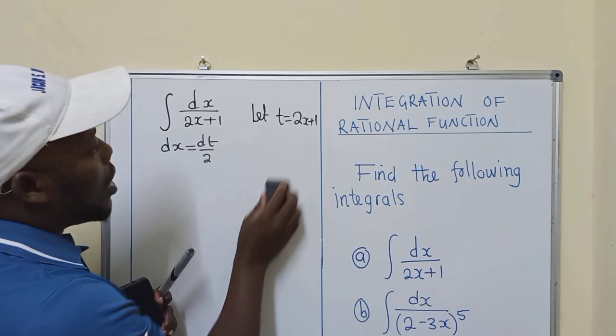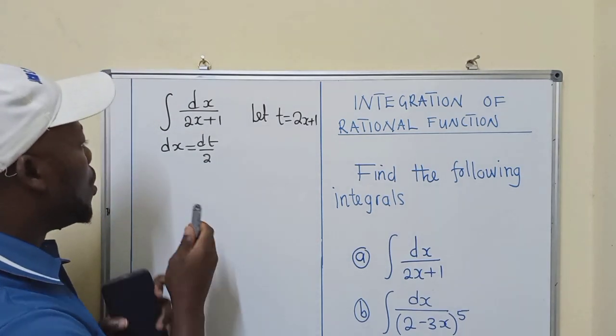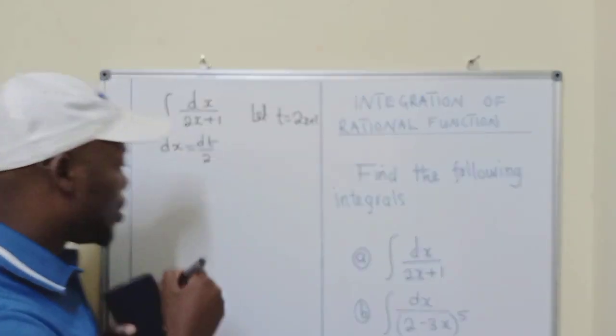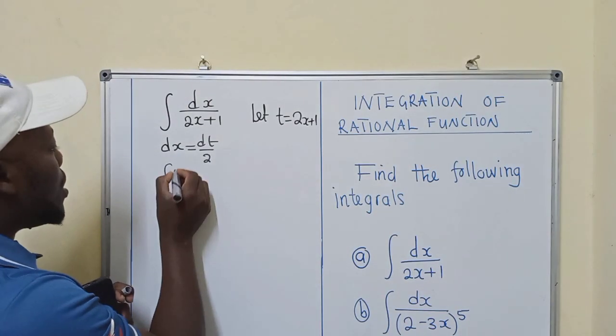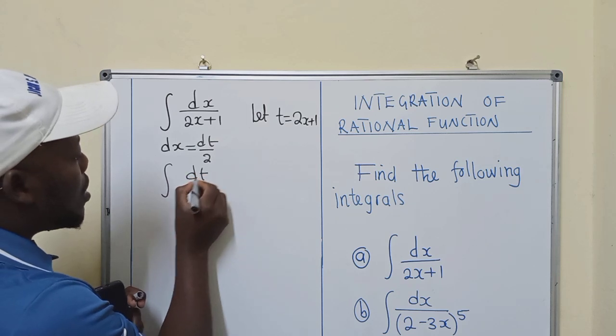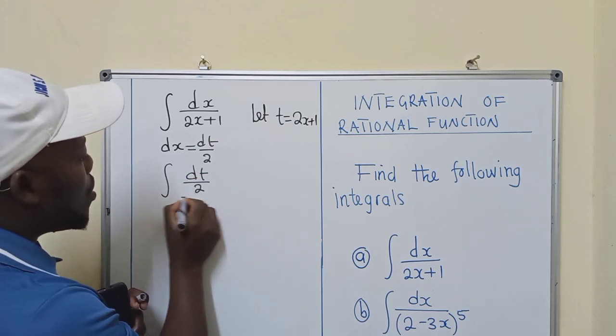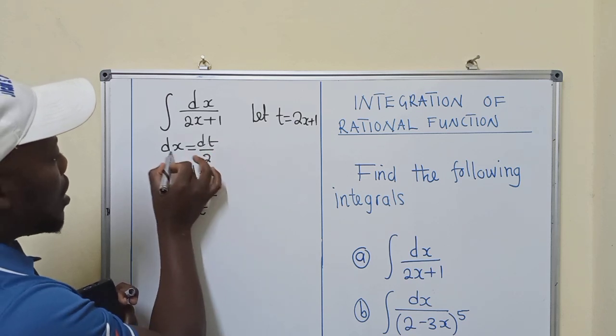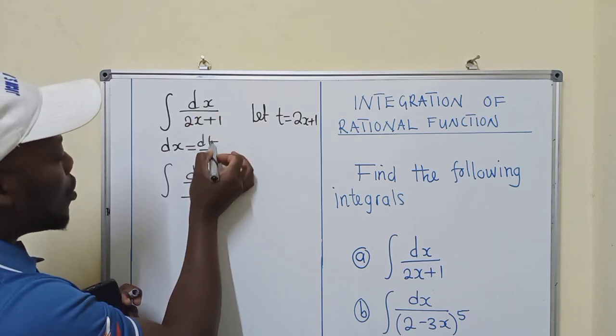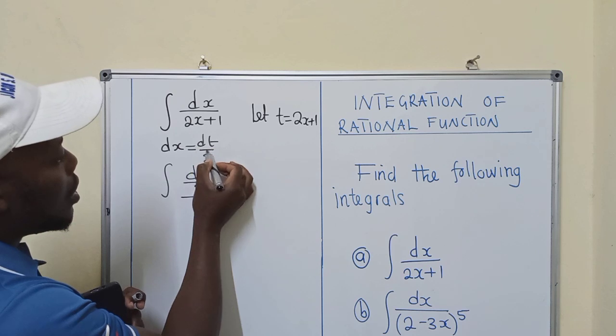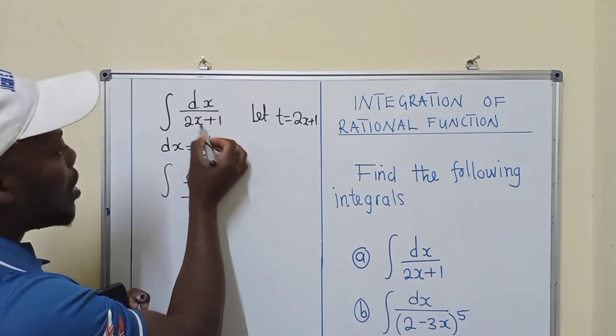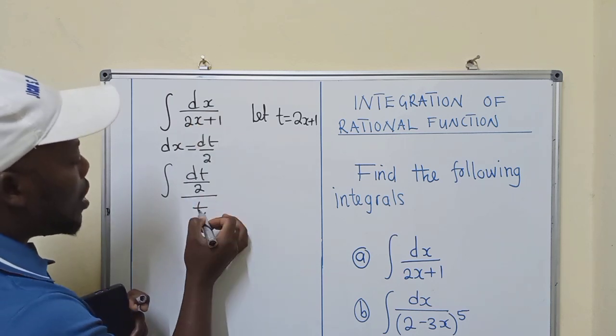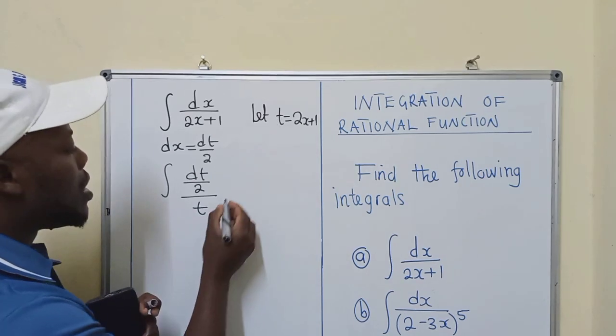So after you've done so, you now substitute. So we're going to write the integral sign. And then we say dt over 2 over t. So this dx, which is right here, I'll substitute, put dt over 2 right here. And here, I'll put a t, which is right here.